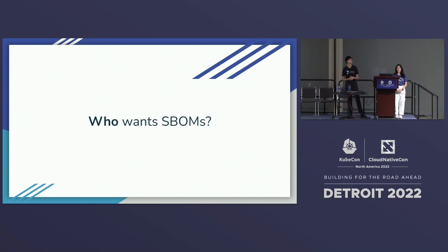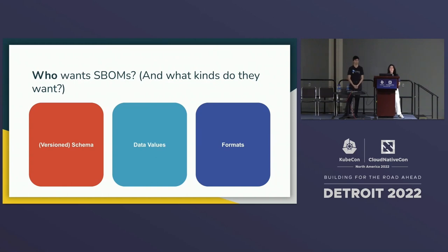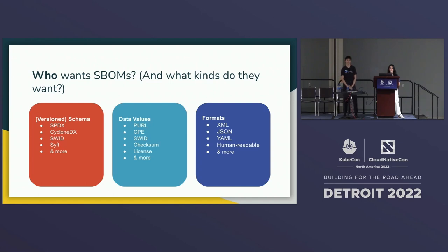That leads us to our next question: who wants SBOMs? This phase involves discovering who your stakeholders are and understanding their use cases. Spending time here is really important and will save you time in the long run — this is a rapidly changing ecosystem with new standards coming out constantly and tons of use cases. Understanding the full scope of your stakeholders will make the rest of your SBOM adoption process much smoother. There are a few top-level categories to focus on where you'll need to make choices: schema, data values, and formats.